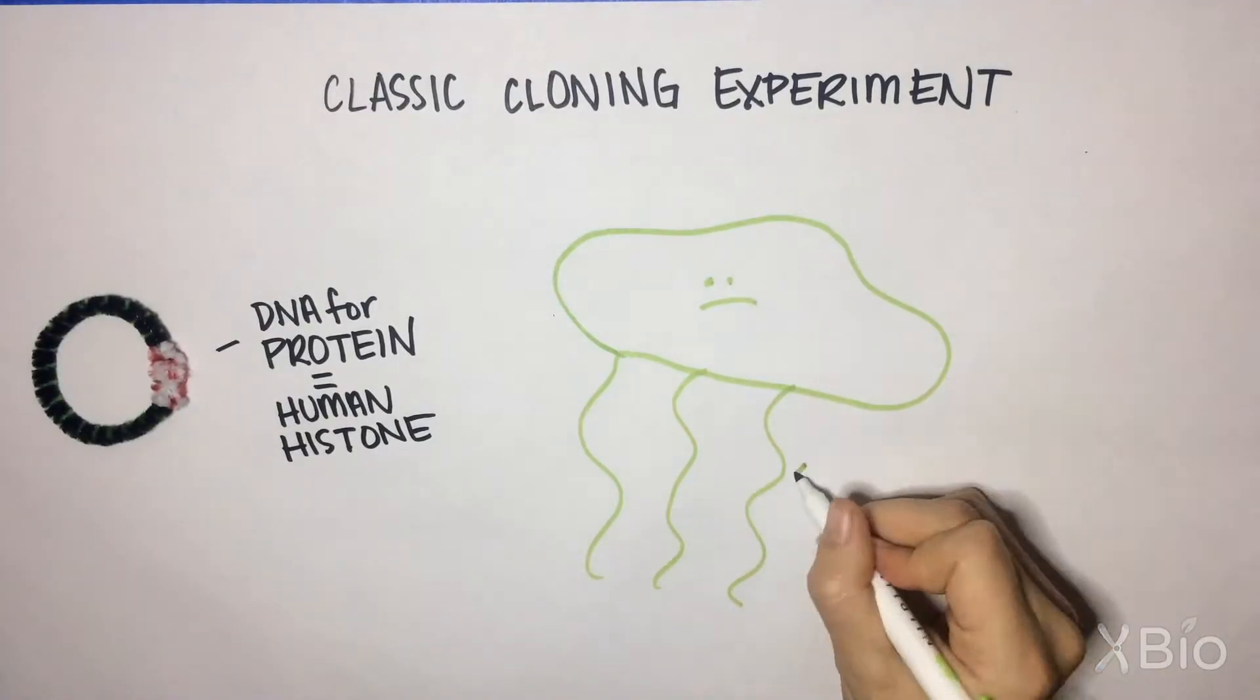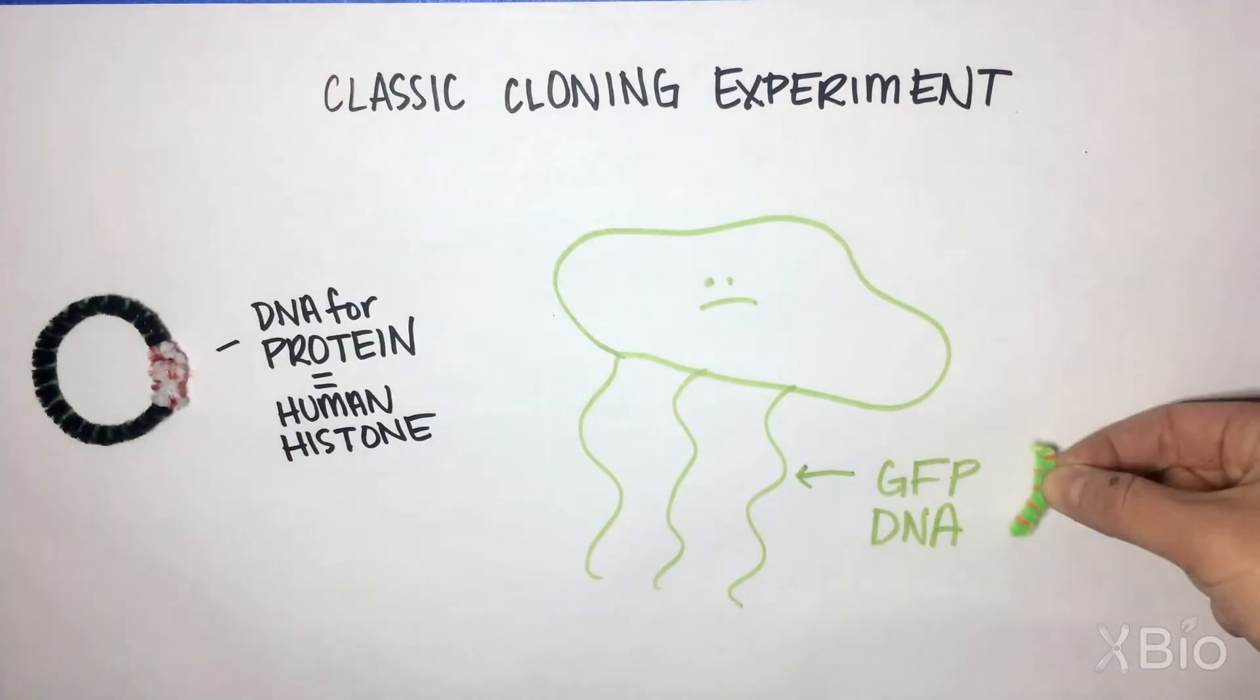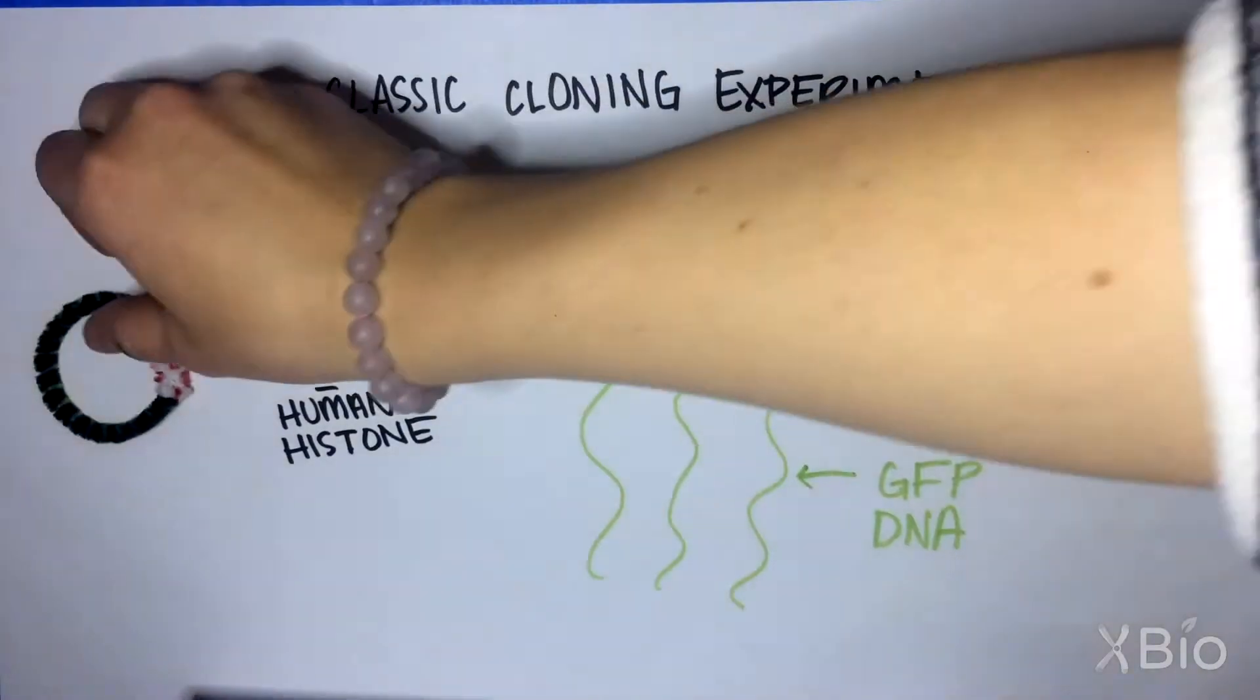We want the histone to fluoresce for our experiments. They usually don't, so we will add the DNA encoding GFP, which stands for green fluorescent protein. We borrowed this DNA sequence from the jellyfish.